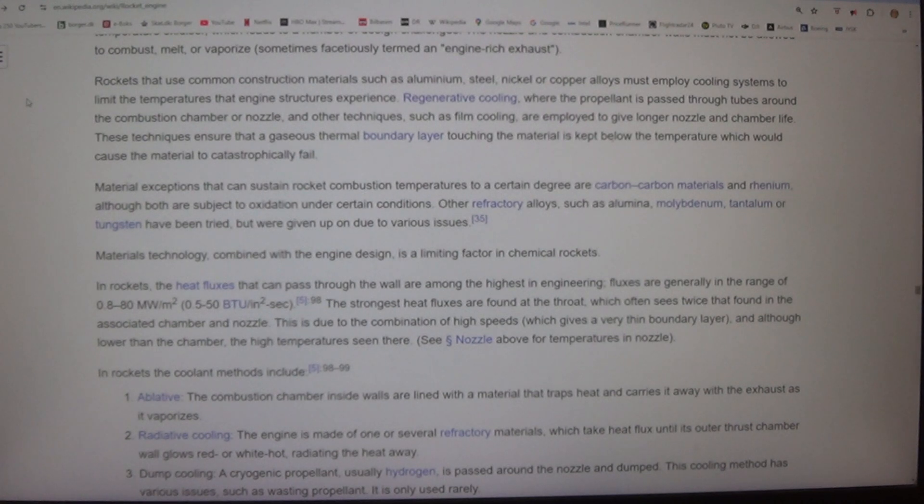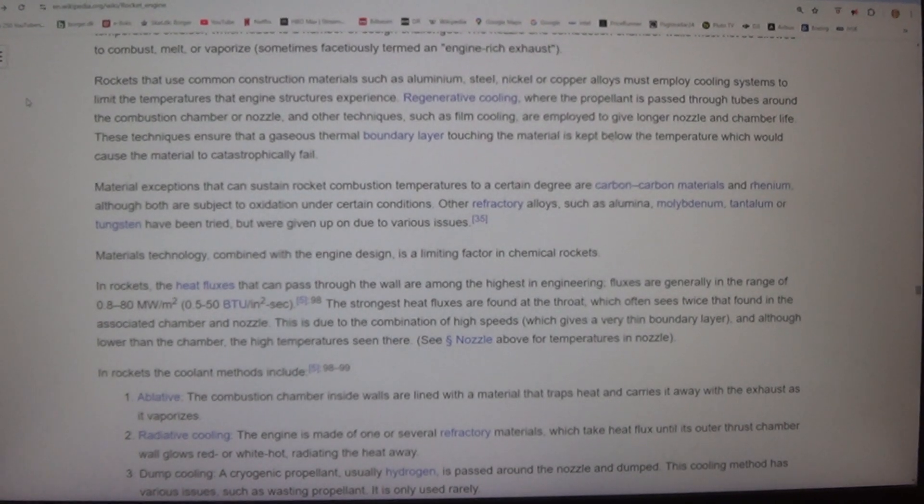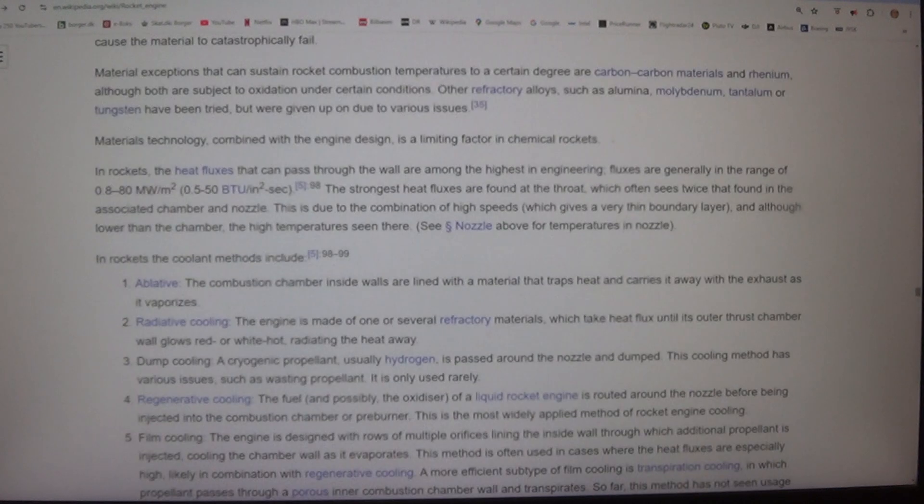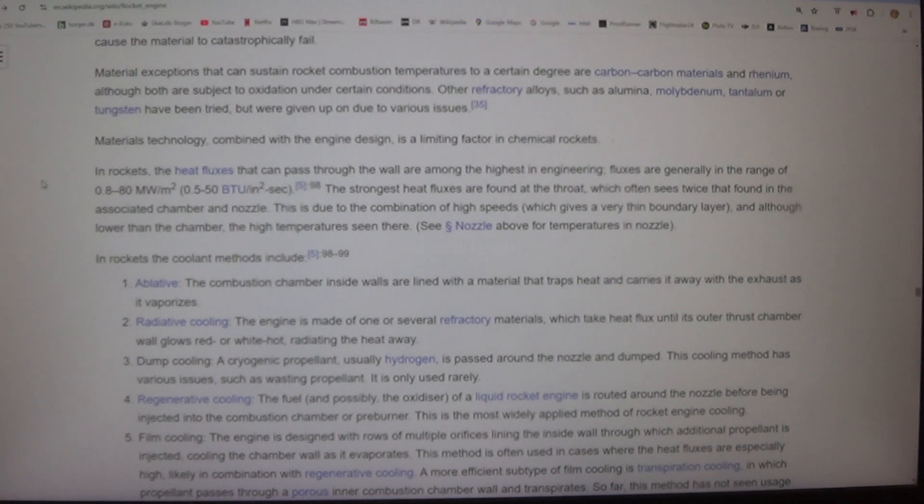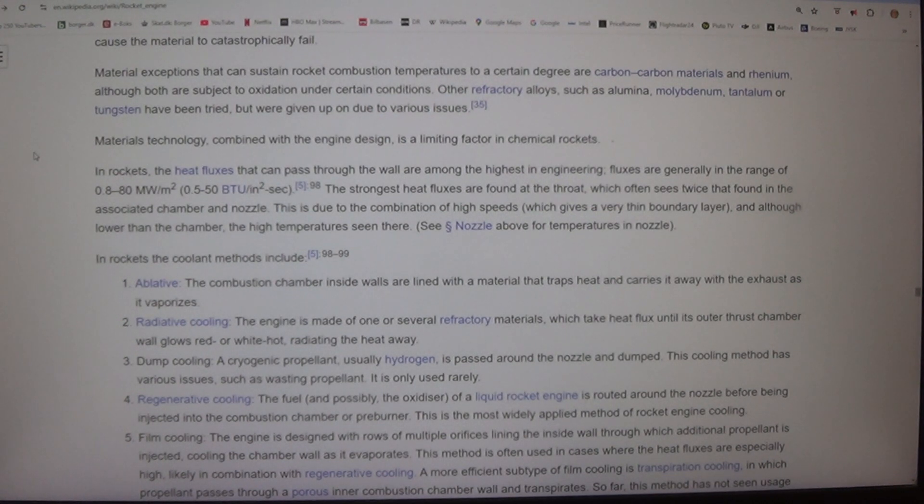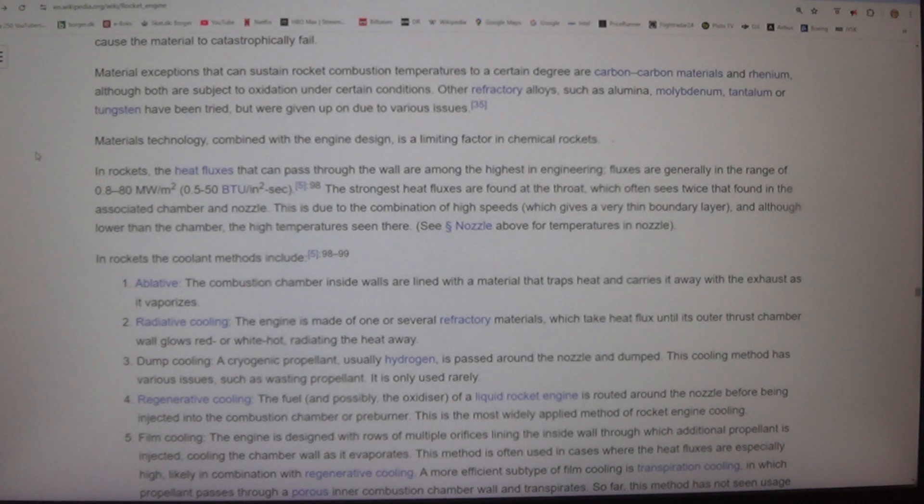Material exceptions that can sustain rocket combustion temperatures to a certain degree are carbon-carbon materials and rhenium, although both are subject to oxidation under certain conditions. Other refractory alloys such as alumina, molybdenum, tantalum, or tungsten have been tried, but were given up on due to various issues.